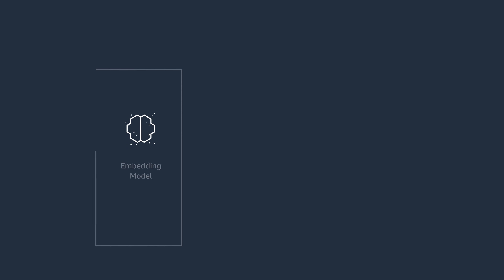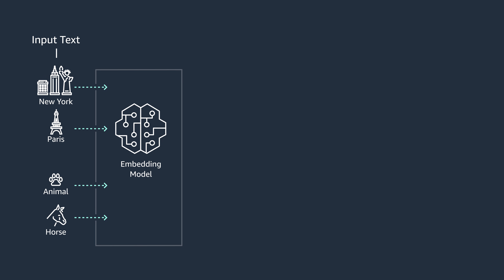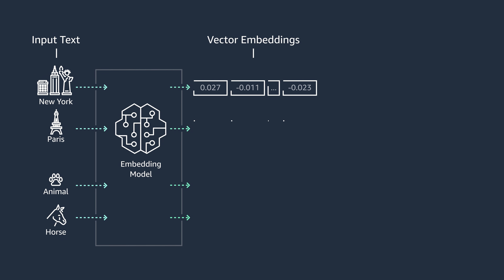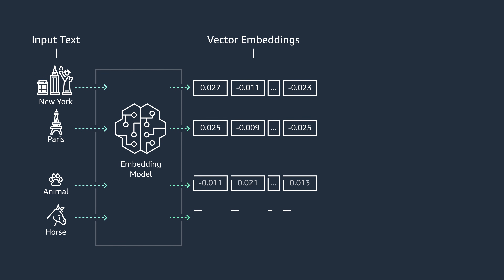Let's further define embedding and its relevance when implementing RAG. Embedding refers to transforming data like text, images, and audio into numerical representation in a high-dimensional vector space using machine learning algorithms.